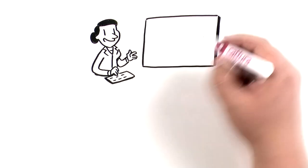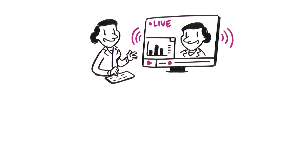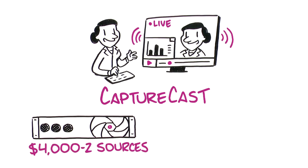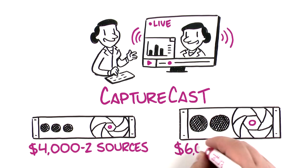Record and stream with confidence. Get everything you need in one place with CaptureCast. Units start at $4,000 for two sources and $6,000 for four sources.